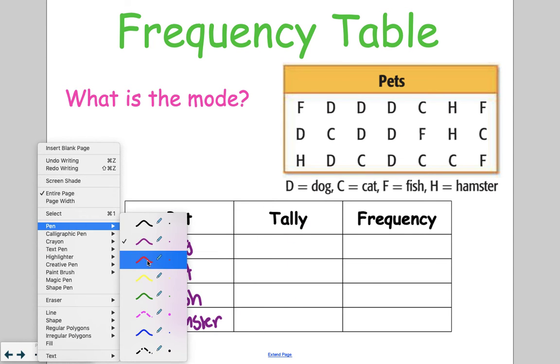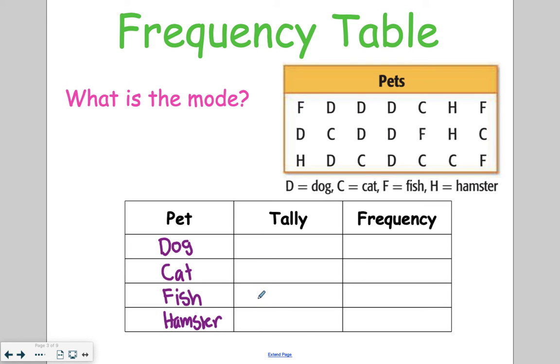Then we're going to go ahead and tally. So all you are doing here is putting tally marks. We've got fish, then dog, another dog, another dog, a cat, a hamster, a fish. Starting that next line, we've got dog, cat, dog. Remember, when you get a group of 5, you go across. Another dog, fish, hamster, cat. Starting the third line, hamster, dog, cat, dog, cat, cat, fish.